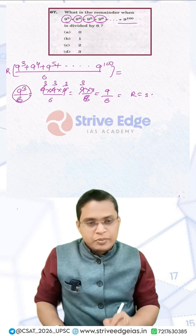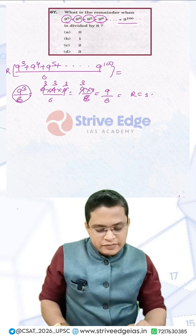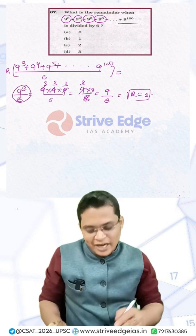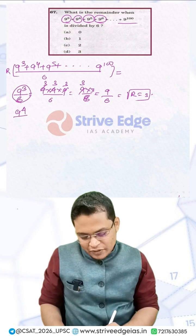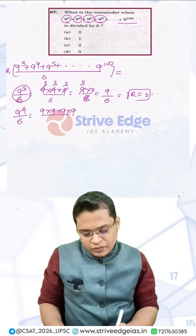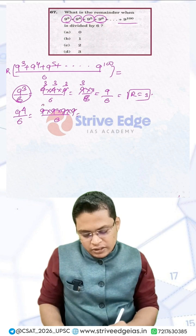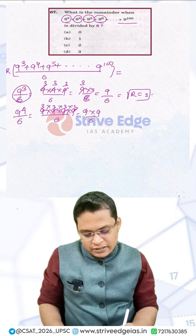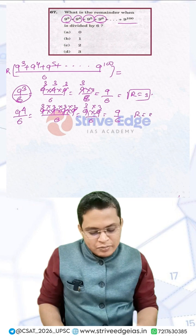Now 9⁴ divided by 6: writing it as 9 × 9 × 9 × 9 divided by 6. Each 9 gives remainder 3, so we get 3 × 3 × 3 × 3. That is 9 × 9 divided by 6, which gives 3 × 3 = 9 divided by 6. Again the remainder is 3.